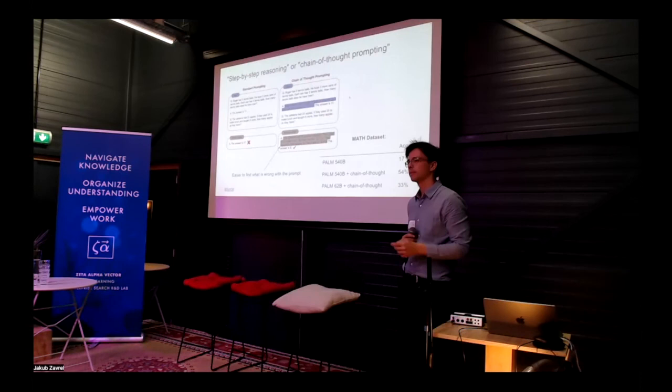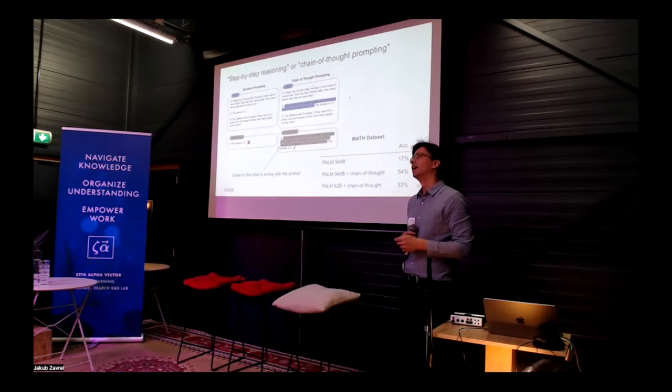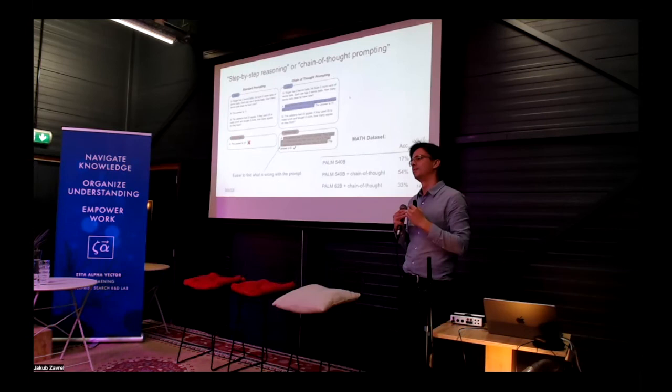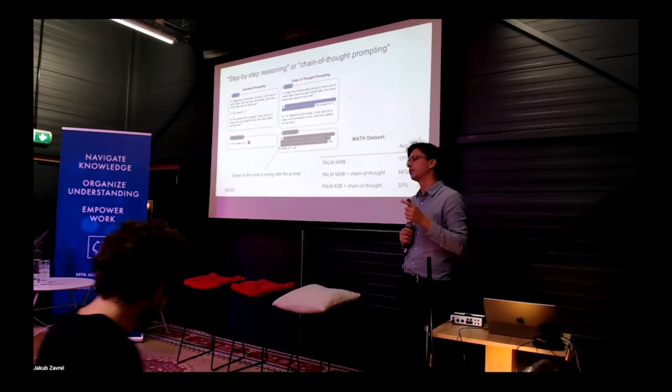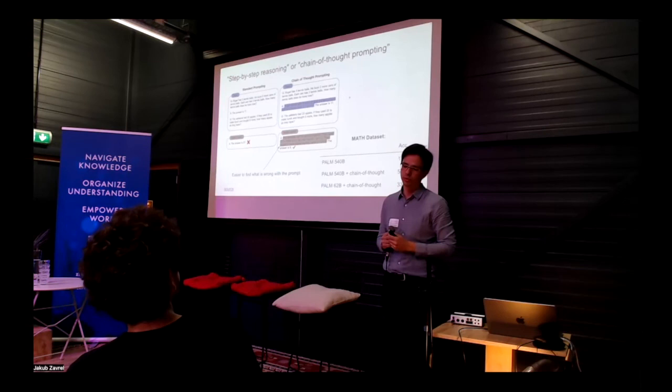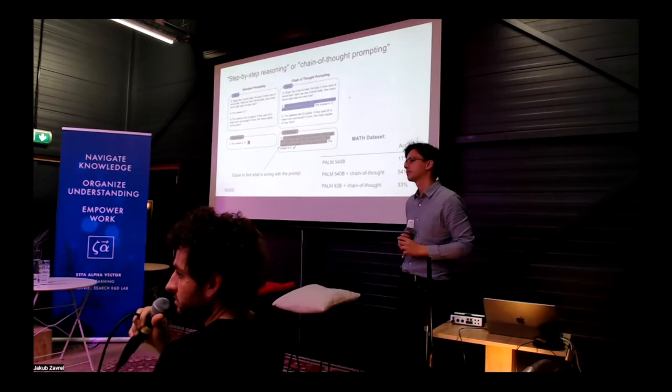Audience question: You mentioned several times that things work when the input can fit in the model. Do you see research keeping up with making it more efficient to encode more tokens in the input? Speaker: That's why you'll always need a search engine. If you're reading a book, it seems very hard to process that book at inference time using an expensive model. Using a cheaper model to select what are the relevant parts you're going to need is key to expanding to longer contexts.